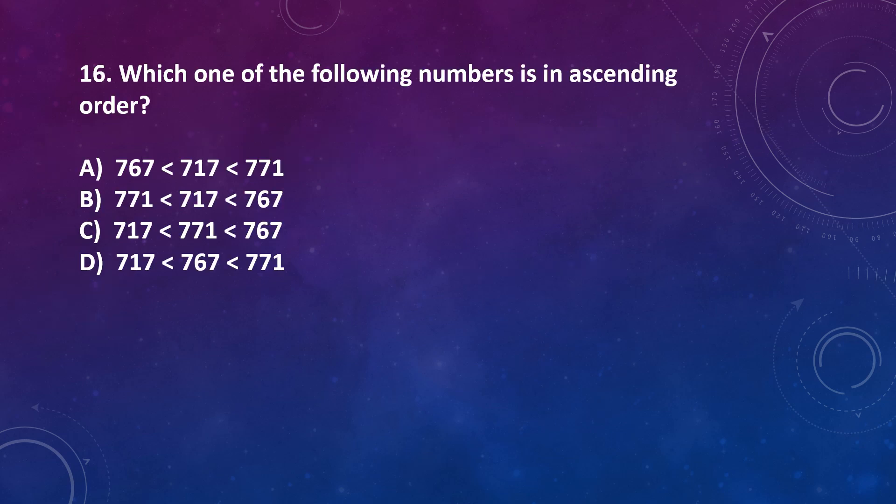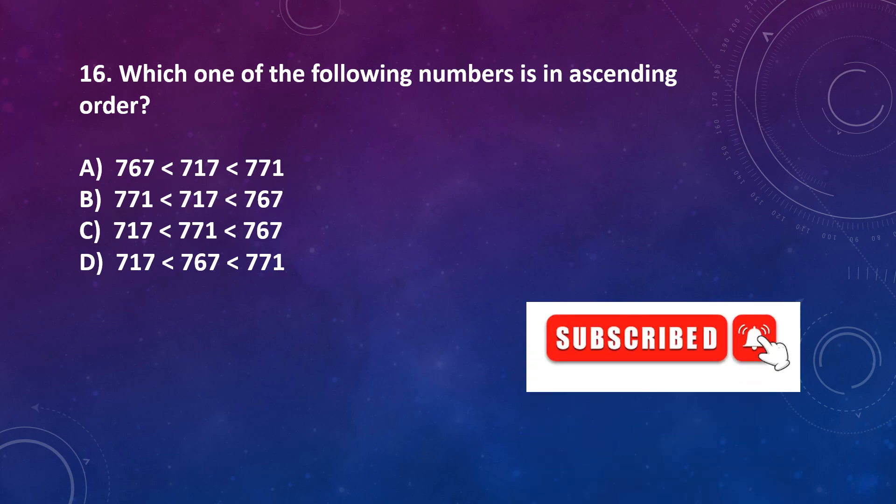Question number 16: Which one of the following numbers is in ascending order? Ascending order is increasing order. Correct answer is option D, because these numbers are in increasing order.